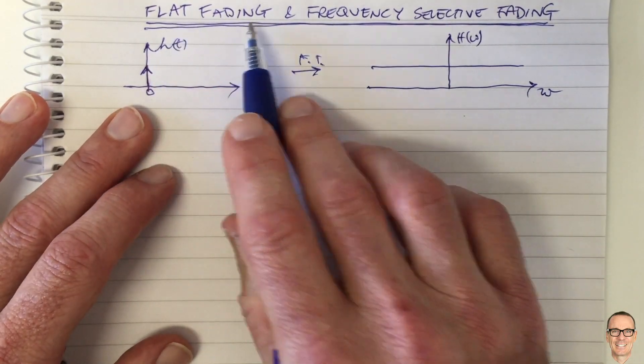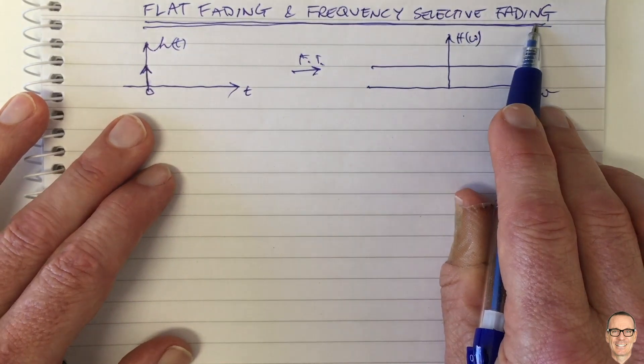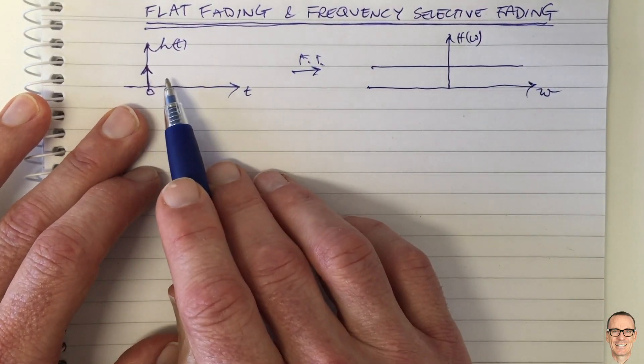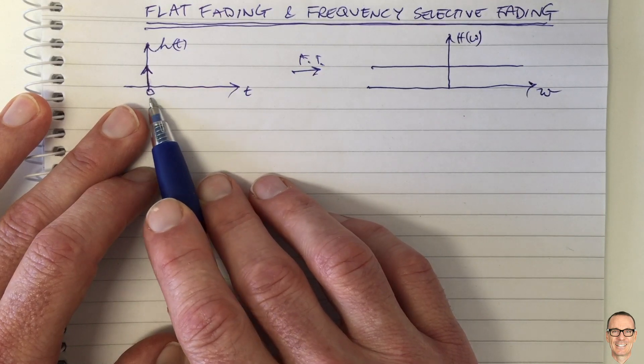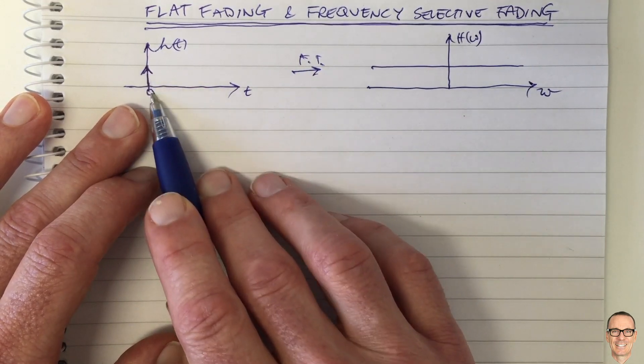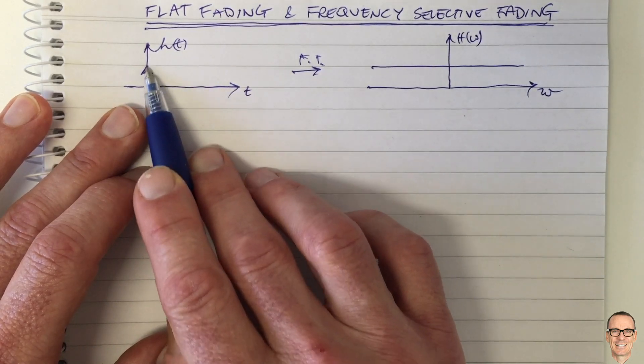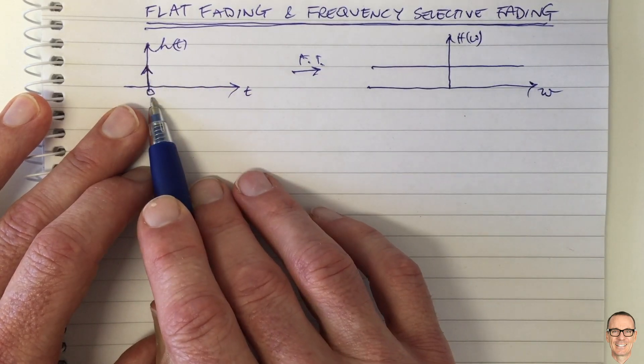So what is the difference between flat fading and frequency selective fading? I've shown here the impulse response for a channel with a single path, where we've taken the time reference to be the time that the path is received, so I put it at zero. So this is the impulse response, it's just a delta function at time zero.